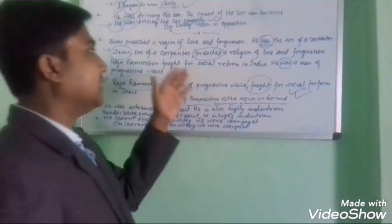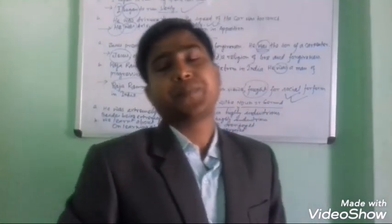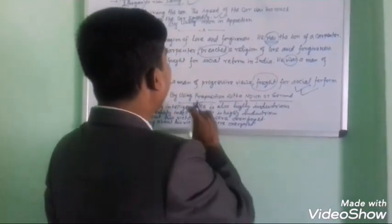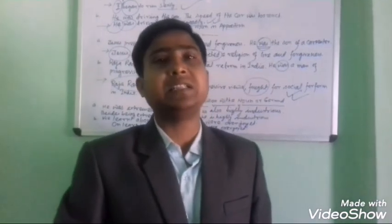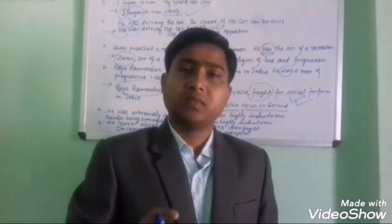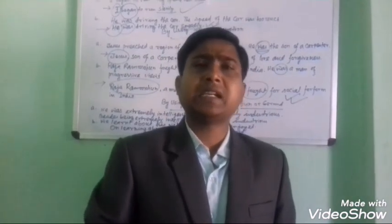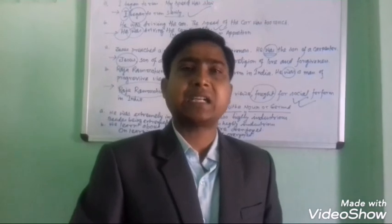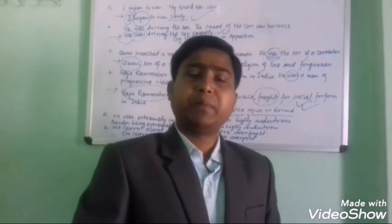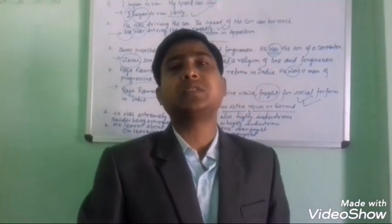The next technique is by using a preposition with a noun or gerund. First, what is a gerund? A gerund is a kind of verbal noun. We add '-ing' to the main form of the verb and it acts like a noun. Sometimes a preposition is used before a gerund, and thereby we can join two or more sentences into a simple sentence.